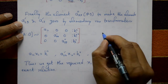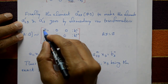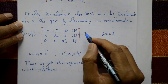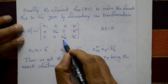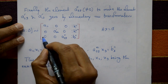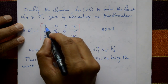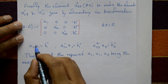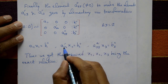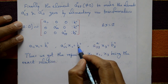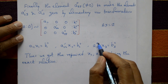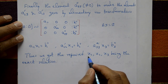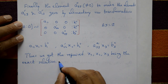Now the matrix equation Ax = b has matrix A reduced to a diagonal matrix, where all non-diagonal elements are zero. This gives: a11·x1 = b1''', a22'·x2 = b2''', a33''·x3 = b3'''. Thus we directly get the required solutions x1, x2, x3 as the exact solution.